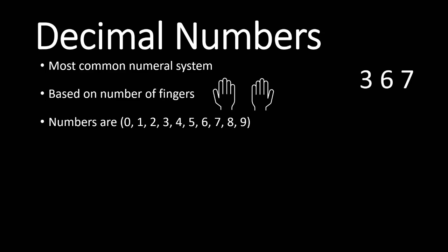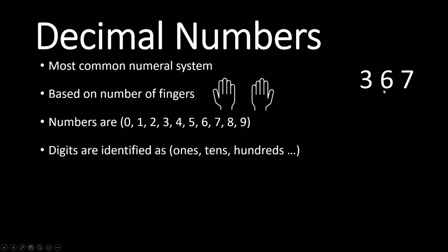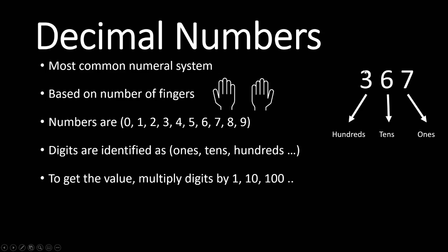So let's take this number for example. As we can see here, these numbers 3, 6, 7 have different values based on the location of these numbers. So this 3 for example has a different value than 6 and a different value than 7. 7 is in the 1s place, so this means this 7 is only 7. 6 is in the 10s place, which means this number is 60 actually. And this 3 is 300, so this number is in the 100s place. And we can keep going on for thousands, tens of thousands, hundreds of thousands, millions. So if you want to get the value of any of these numbers, you multiply it by the unit of that location — the number here is multiplied by 100, the number here is multiplied by 10, and this number is multiplied by 1.